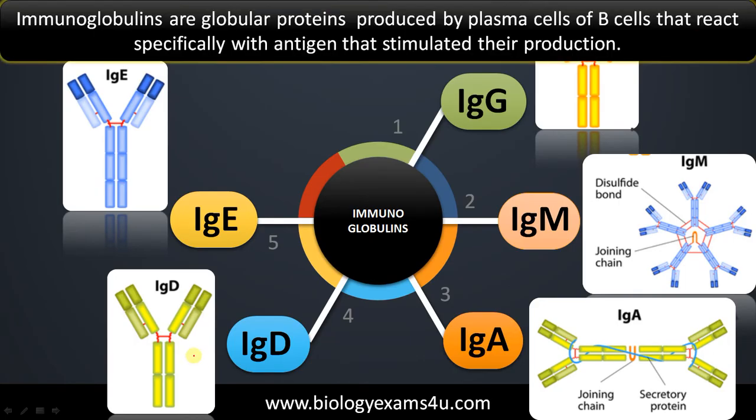Let's begin with the definition of immunoglobulins. Immunoglobulins or antibodies are globular proteins produced by plasma cells of B cells that react specifically with the antigen that stimulated its production.